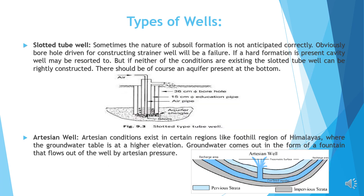Slotted tube well. Sometimes the nature of subsoil formation is not anticipated correctly. Obviously, a borehole driven for constructing a strainer well will be a failure. If a hard formation is present, a cavity well may be resorted to. But if neither of the conditions are existing, the slotted tube well can be rightly constructed. There should, of course, be an aquifer present at the bottom.